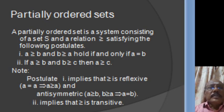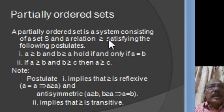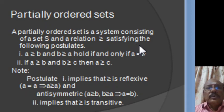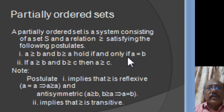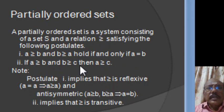A partially ordered set is a system consisting of a set S and a relation greater than or equal to, satisfying the following postulates. First: A ≥ B and B ≥ A hold if and only if A = B. Second: if A ≥ B and B ≥ C, then A ≥ C.